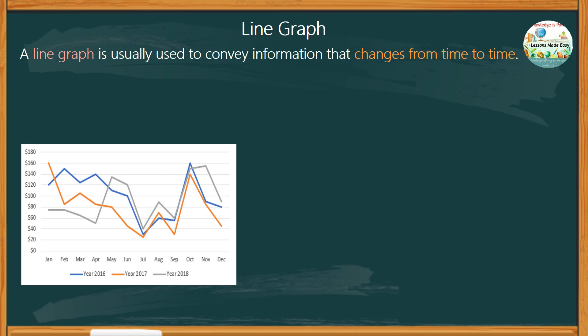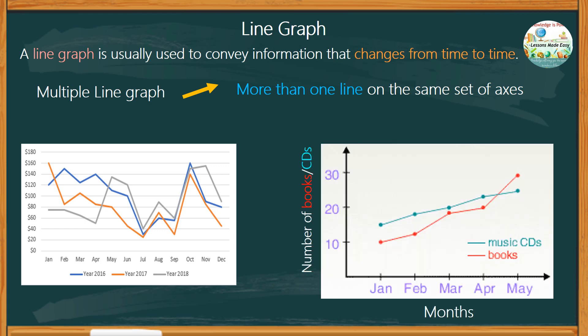Another type of a line graph is known as a multiple line graph. It is formed when you plot more than one line on the same set of axes. Take a look at this example of a multiple line graph showing the growth of Lisa's collection of books and CDs. The x-axis is labeled as the time within a period of 5 months from January to May, while the y-axis has two variables that measure the number of books and the number of CDs.